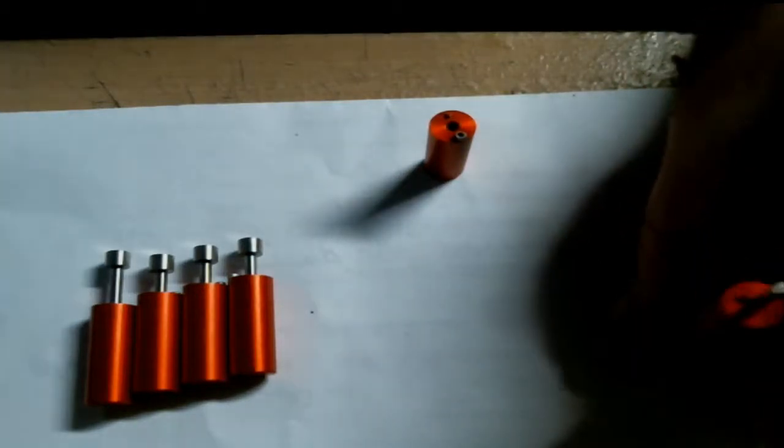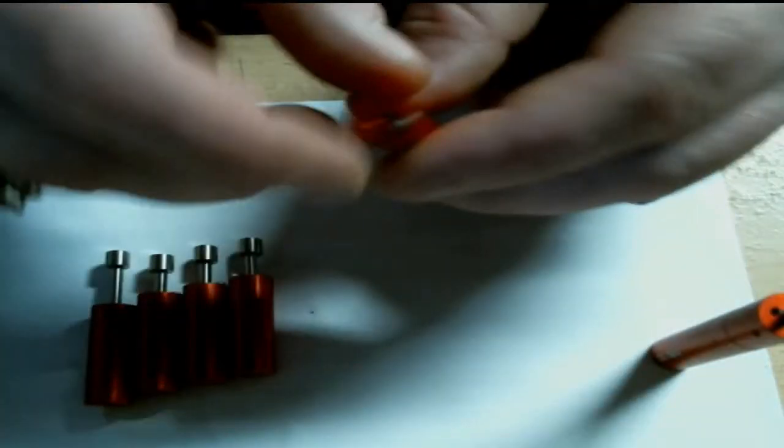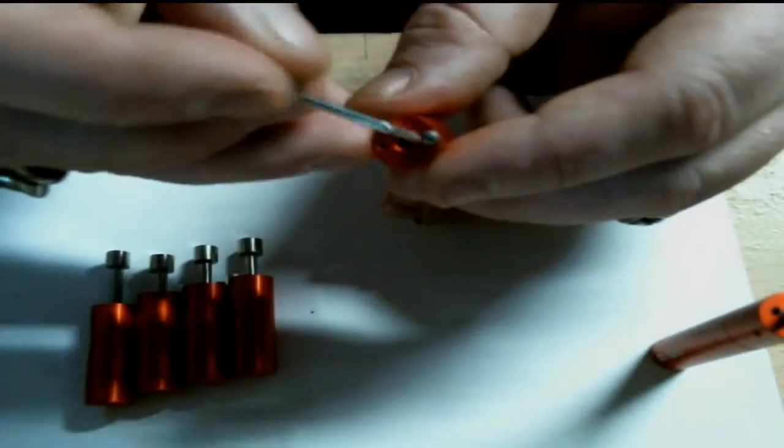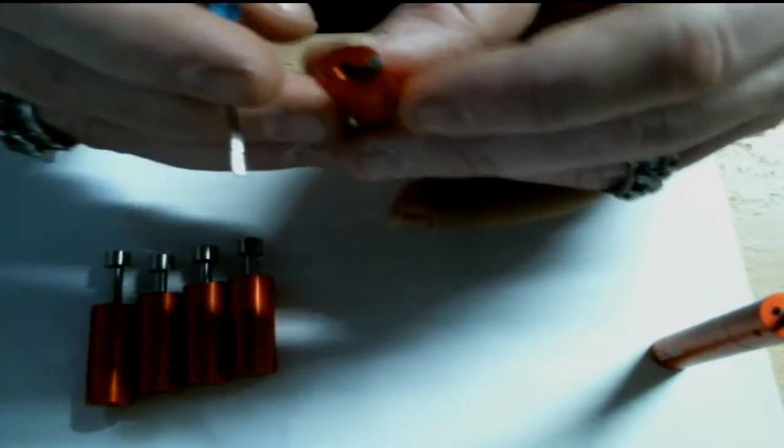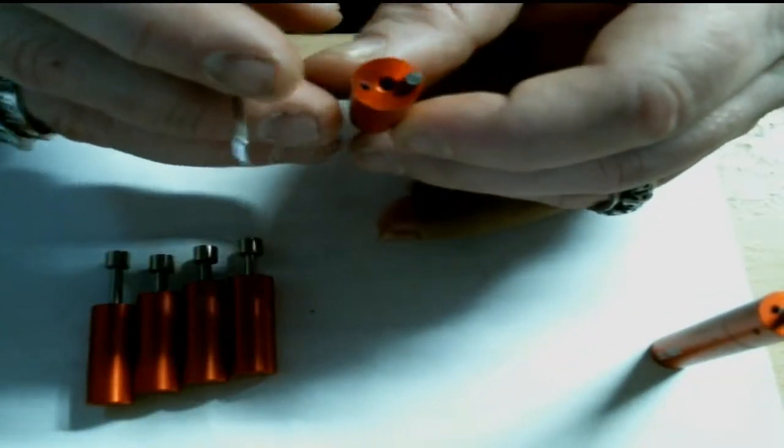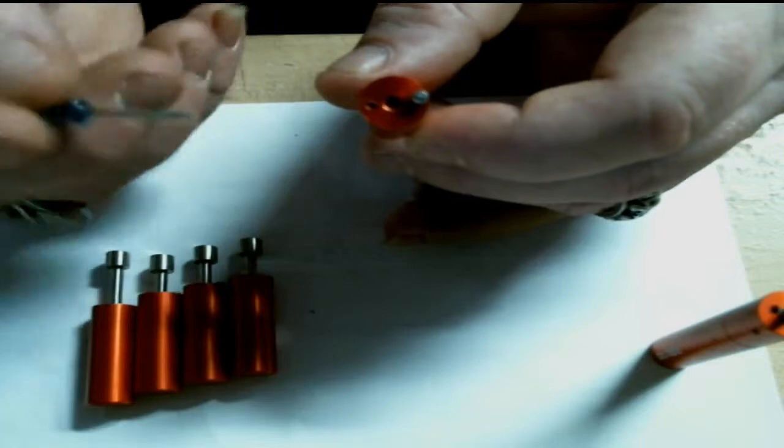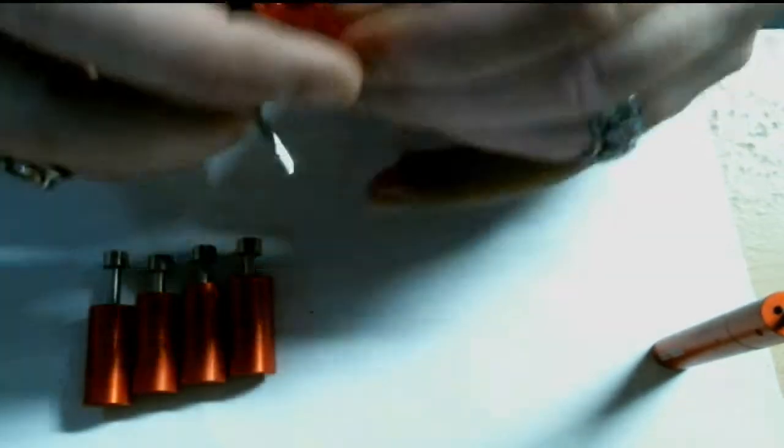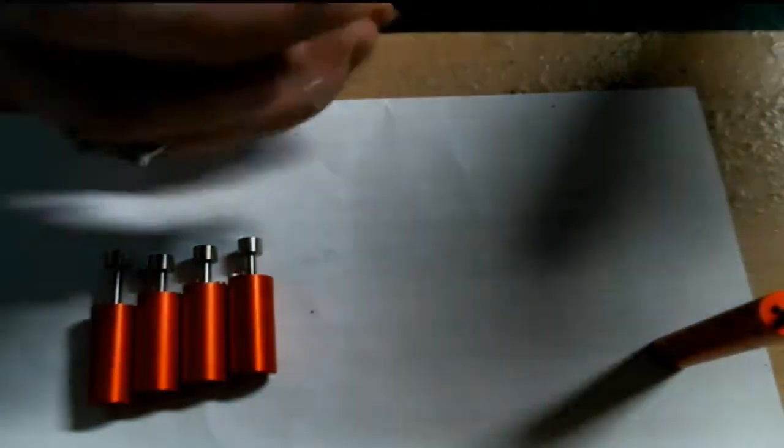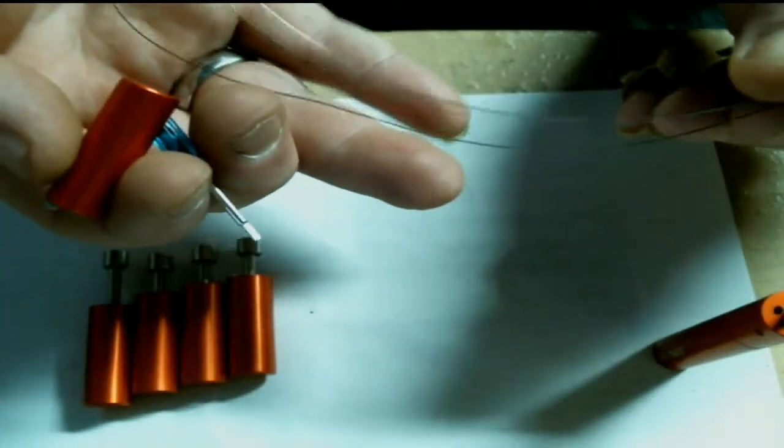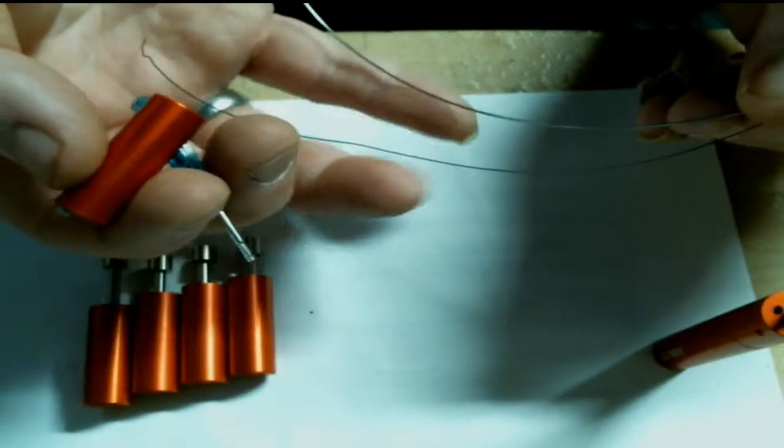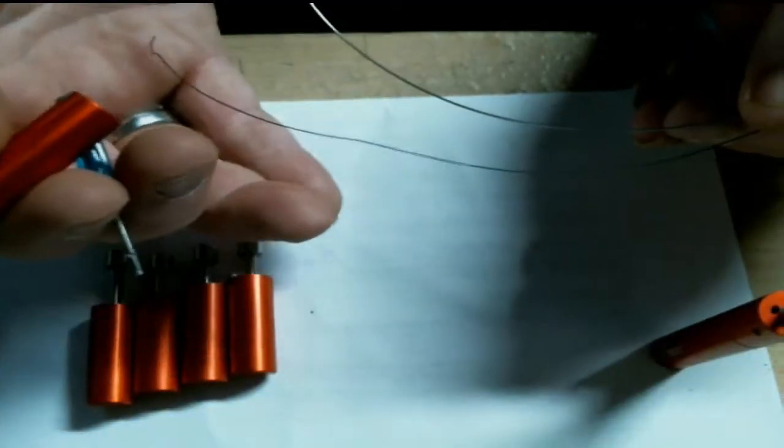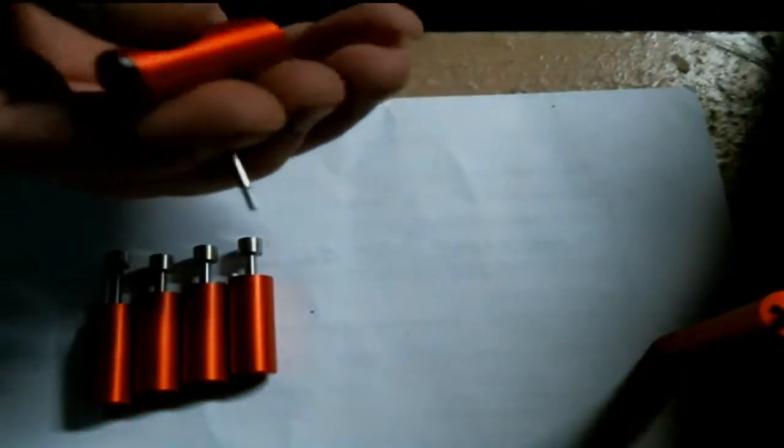Now I want to talk about these adjustment screws here. There's two positions, you have this position and this position. From my experience, it's for different diameter of coil depending on what size wire you use. I have two pieces right here, a piece of 28 and a piece of 22. The 22 is this one, the 28 is going to be this thinner one.